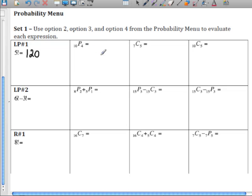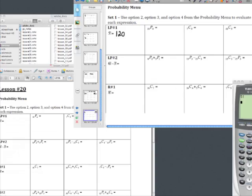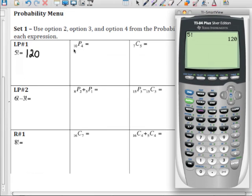The next problem we have is 10P4. Now, P stands for permutation. So let's go back to our calculator. I have to enter the 10 in first to do this.